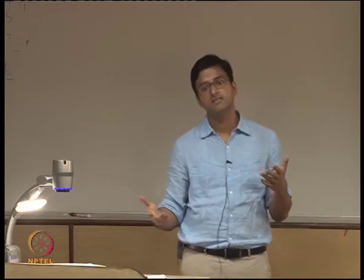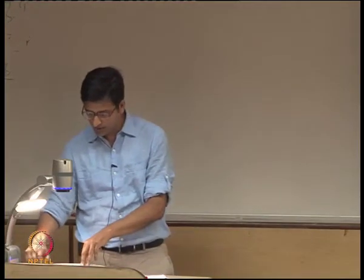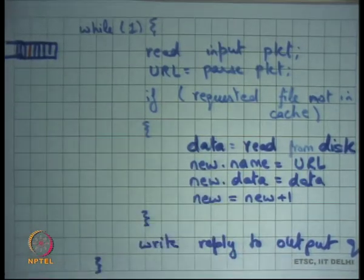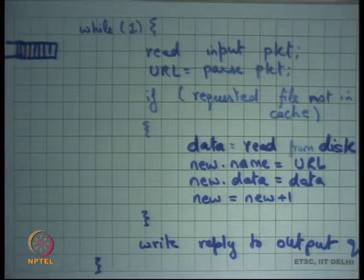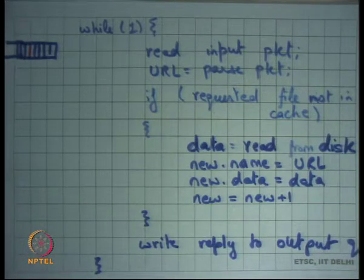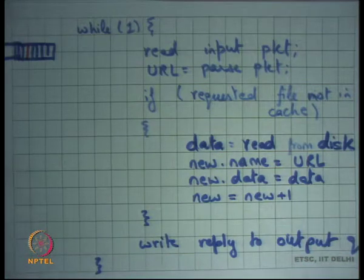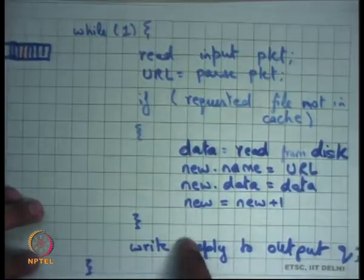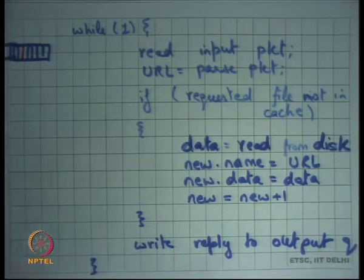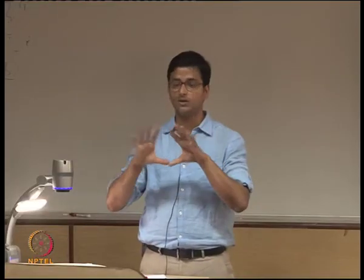The proposed solution: if the requested file is not in cache, don't handle it in the current thread's context — spawn a new thread to wait on the disk and proceed to pick up the next request. This is multi-threading. This is an example where you need concurrency to improve system utilization and reduce response times.